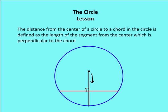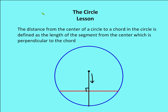When we talk about the distance from the center of the circle to the chord, we're talking about the shortest distance from the center to a point of the chord. That shortest distance is going to make a perpendicular line with that chord. Any other segment longer than this distance will not make a right angle with that chord. The distance from the center to the chord is defined as the length of the segment from the center which is perpendicular to that chord.